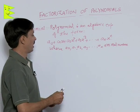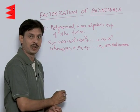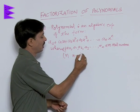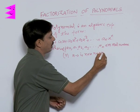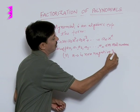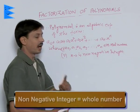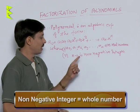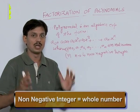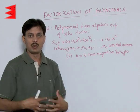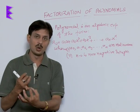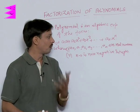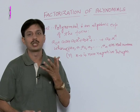The second condition is that N is a non-negative integer. Non-negative integer means N is a whole number — the value of N refers to the power of the variables. Powers of the variables are either 0, 1, 2, 3, 4 — that is, complete positive values with the least being 0.